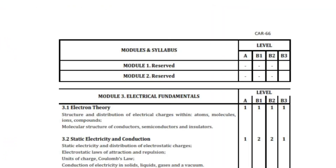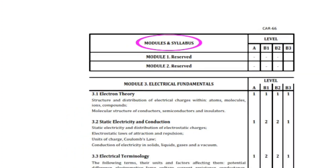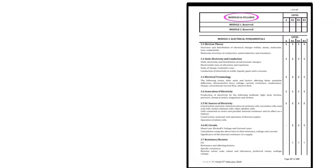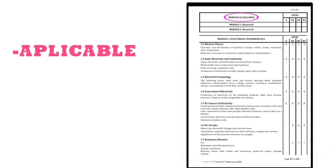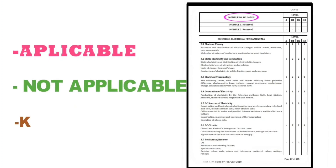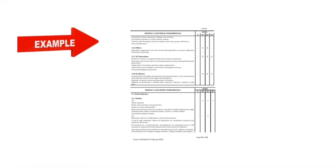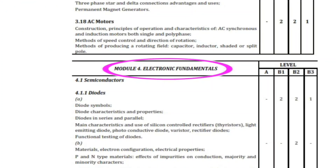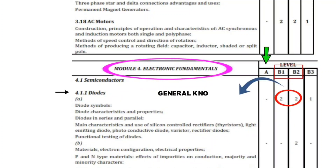Next is module syllabus. For whatever module you are studying, this table shows which subtopics you need to study, which are not applicable for you, and to which knowledge level you need to study them. For example, in Module 4 syllabus, the subtopic on Diodes: it is not required for CAT C license. For B1 and B2, they need to study it at Level 2, meaning general knowledge. For B3, they require Level 1 — general familiarization.